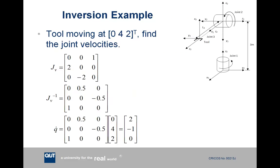So here we've got an inversion example where we have a desired tool point velocity of 0, 4, 2. So this is the answer we got before. What we want to do is find the joint velocities. So we've already got our Jacobian for this particular arm configuration. So we can invert this. Inverting a 3x3 matrix is quite a bit more involved. I just use MATLAB to invert this, but you can do it by hand. It'll just take a little while.